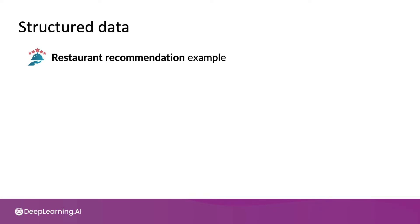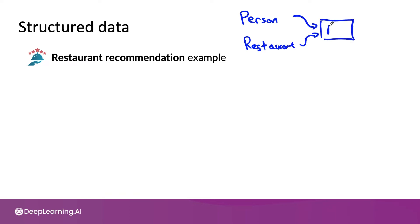Let's use an example of restaurant recommendations, where if you're running an app that has to recommend restaurants to users, one way to do this would be to have a set of features for each user and a set of features for each restaurant, that then get fed into some learning algorithm, say a neural network, whose job it is to predict whether to recommend this restaurant to that person.